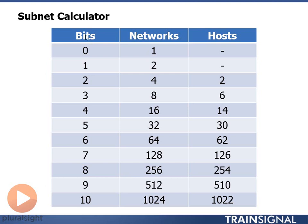In the bits column we start counting with zero and count as high as we like. In the networks column we start at one and then double every number after that. The idea is that we're taking the number two and raising it to the power of the number of bits — so two to the zero power is one, two to the first is two, two squared is four, two to the third is eight. We can accomplish the same math without doing exponential math by just doubling the number above it in the network column.